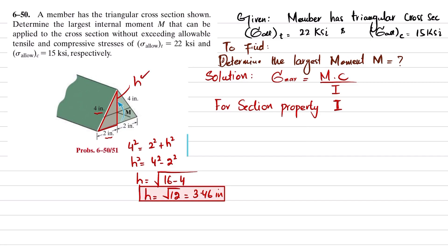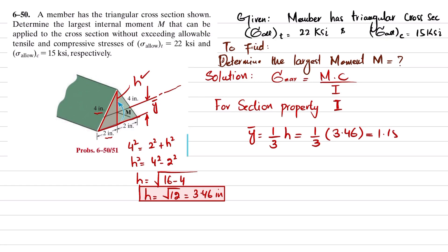The centroid location ȳ is the distance from the neutral axis to the base. For a triangle, ȳ = (1/3) × height = (1/3) × 3.46 = 1.1547 inches from the base. So the neutral axis is 1.1547 inches away from the base.